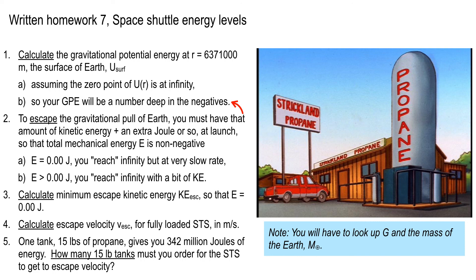So your deliverables are: GPE at surface, escape KE, escape velocity, and how many 15-pound propane tanks to order. It's going to be a big number — solid rocket boosters have a huge amount of joules per ounce of fuel, which is why they use them, and the liquid fuel tank is also loaded with joules per ounce. We're comparing actual rocket fuel energy density to propane. That's homework 7 background — if you have questions after you start, post in discussions.